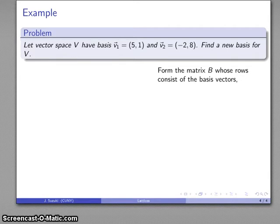So I'm going to first of all form my matrix B where the rows are going to consist of my basis vectors: (5,1) and (-2,8).